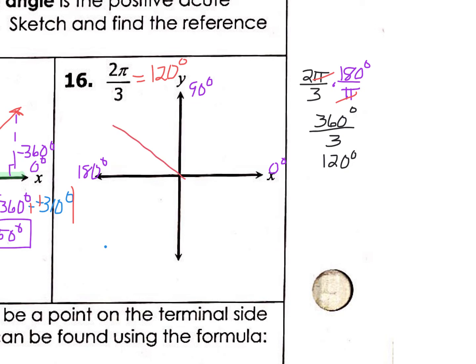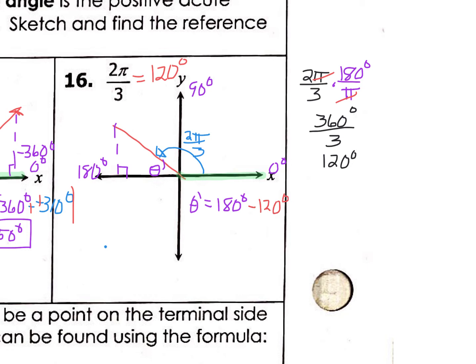So if this is 0 degrees, 90 degrees, and 180 degrees, I know that 120 degrees is somewhere between 90 and 180. I draw my terminal side there — remember my initial side was here, and we go from initial to terminal. That represents the 2π/3, which is 120 degrees. I draw this right triangle, and theta prime is my reference angle. To get theta prime, I take 180 degrees (which is our x-axis value) and subtract this 120 degrees. That leaves us with theta prime equals 60 degrees.